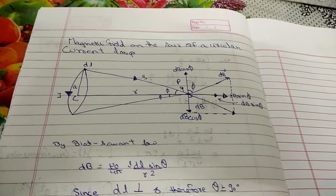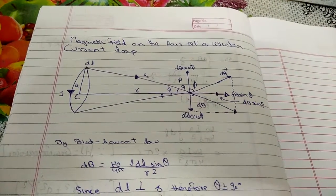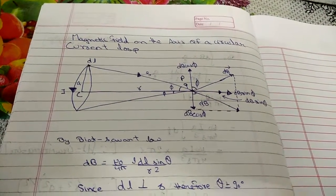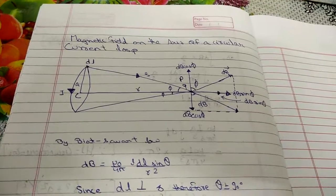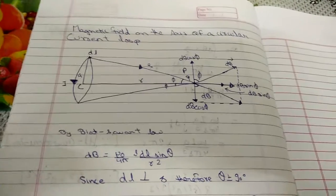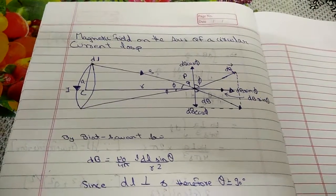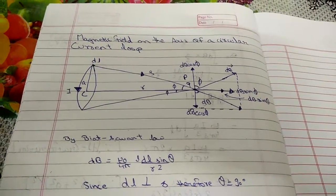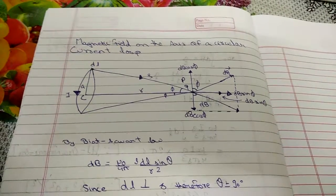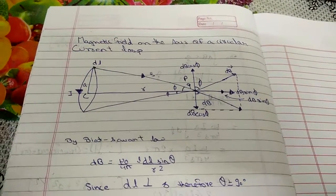Today we are going to discuss magnetic field on the axis of a circular current loop. As shown in the diagram, all the components have been placed.